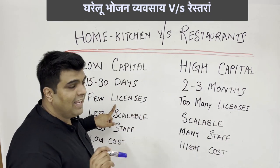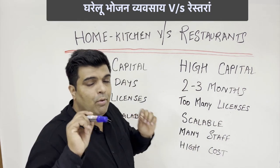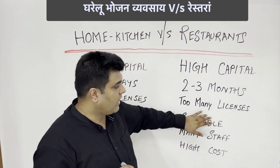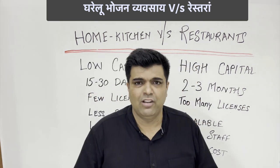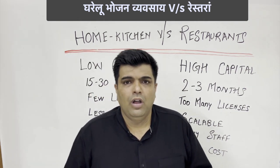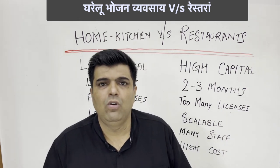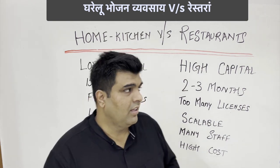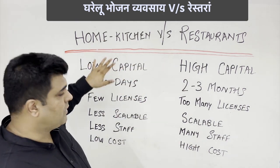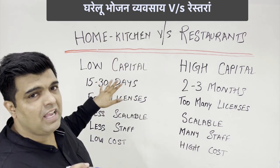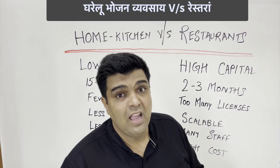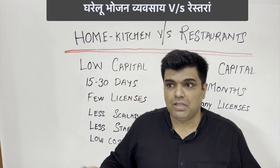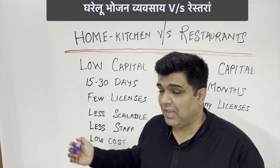The third advantage is licensing. Home kitchen requires far fewer licenses compared to a restaurant. In a restaurant, you need Fire and OC clearance, a business license, a food license, and an FSSAI license. In a home kitchen, you mostly only need an FSSAI license. If you want to scale the home kitchen commercially, then you may need the remaining licenses.